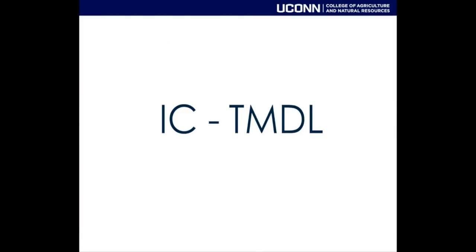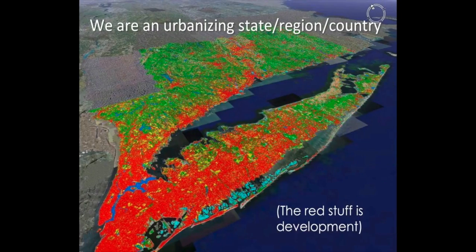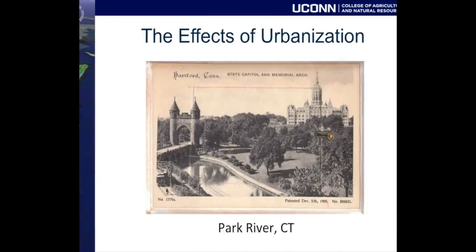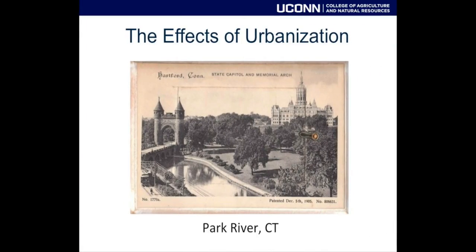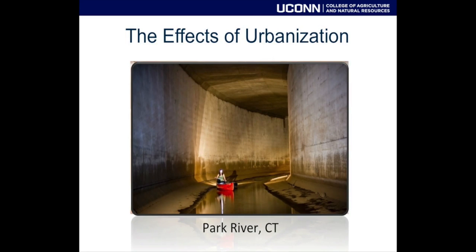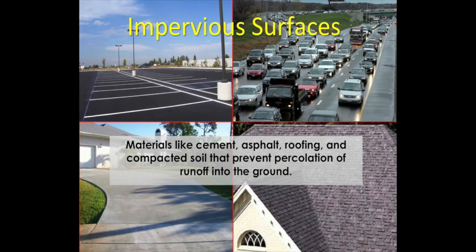Looking at the left half of the phrase IC TMDL: IC stands for impervious cover. As you look at the satellite data we generated, we are an urbanizing state, in an urbanizing region, in an urbanizing country — all the red areas represent development. Over the last 100-plus years, this is illustrated by a postcard showing the Park River going through downtown Hartford — and what the Park River looks like now: it's a tunnel underneath the city.